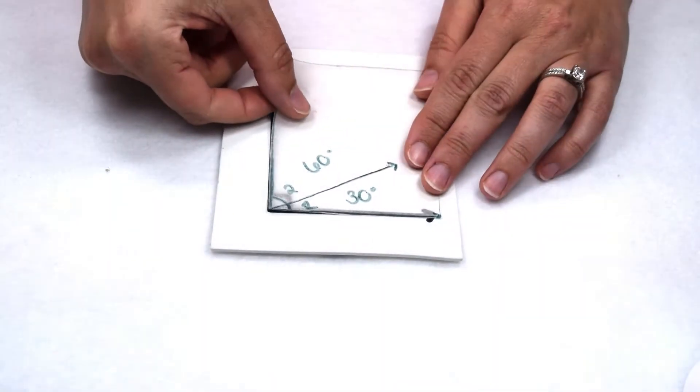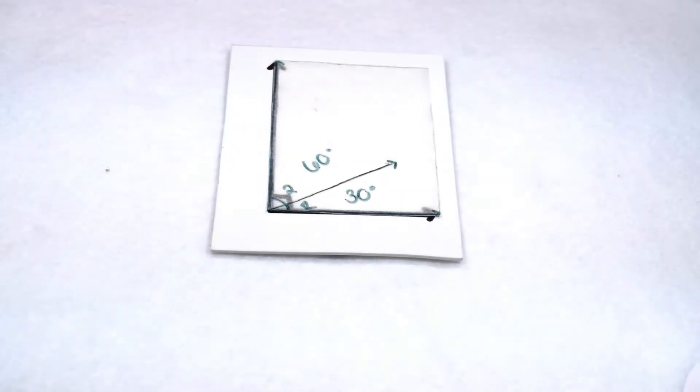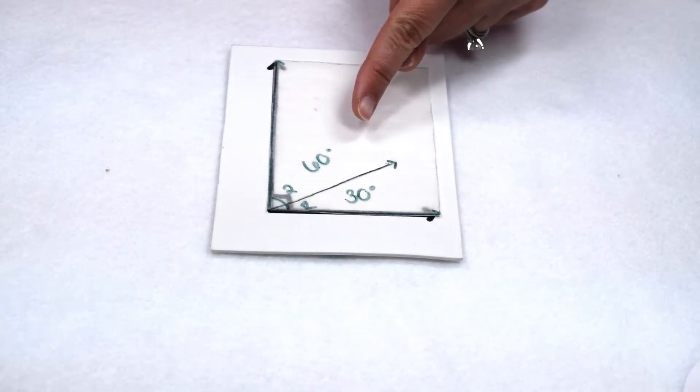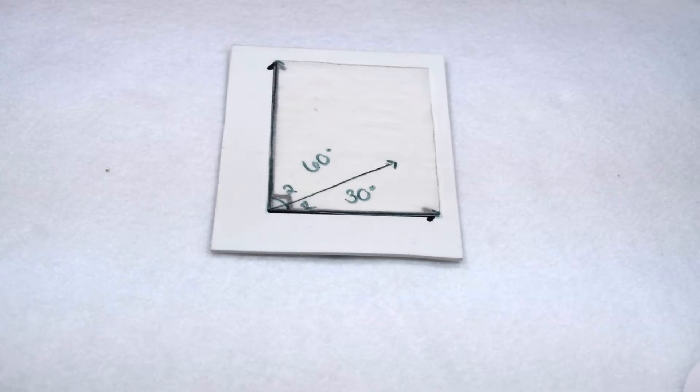We're going to take our right angle and break it down into two smaller angles, a 30 degree angle and a 60 degree angle. When we add together these two angles, 30 plus 60 gives us 90, so therefore these two angles are complementary.